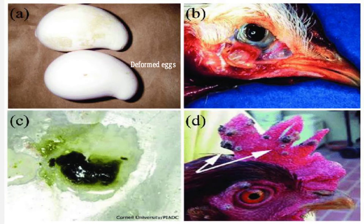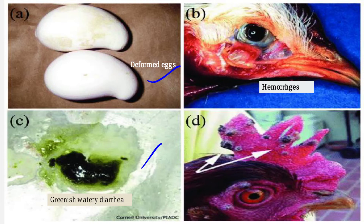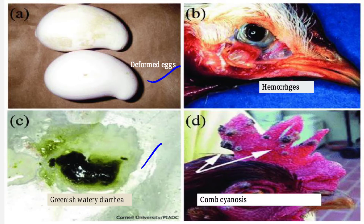Other observable signs include deformed or misshapen eggs, hemorrhages on the conjunctiva that may cause hemorrhagic conjunctivitis, greenish watery diarrhea, urate deposits giving a white color to the feces, and cyanosis or bluish discoloration of the comb.